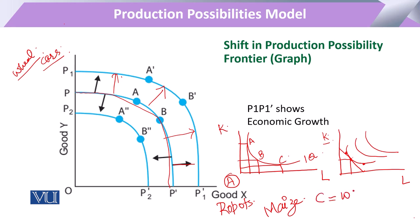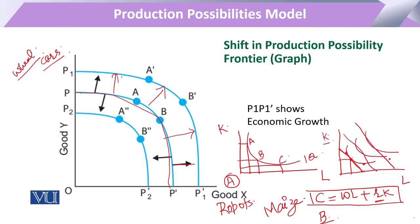The cost is equal to wage multiplied by labor plus amount of capital multiplied by its price. This budget line gives us the total limit of the production possibility frontier. So when the available budget or resources of the economy increase from this level to a further level, and again to another further level, our output increases.